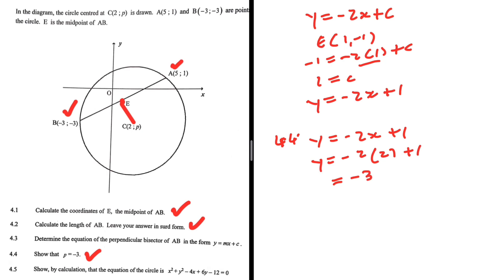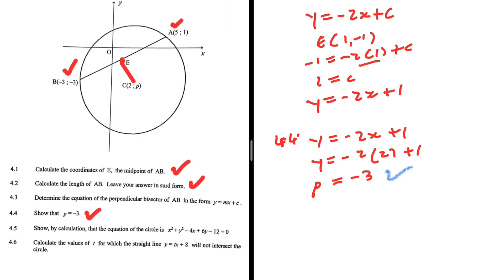So as we can see, P equals minus 3. That is 4.4. Let's go ahead and do 4.5.